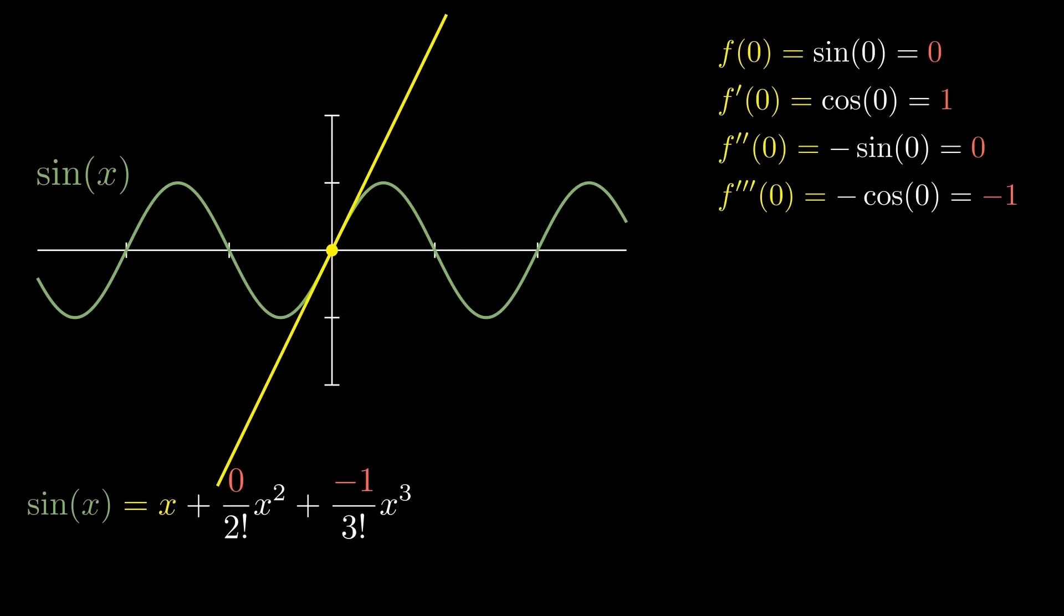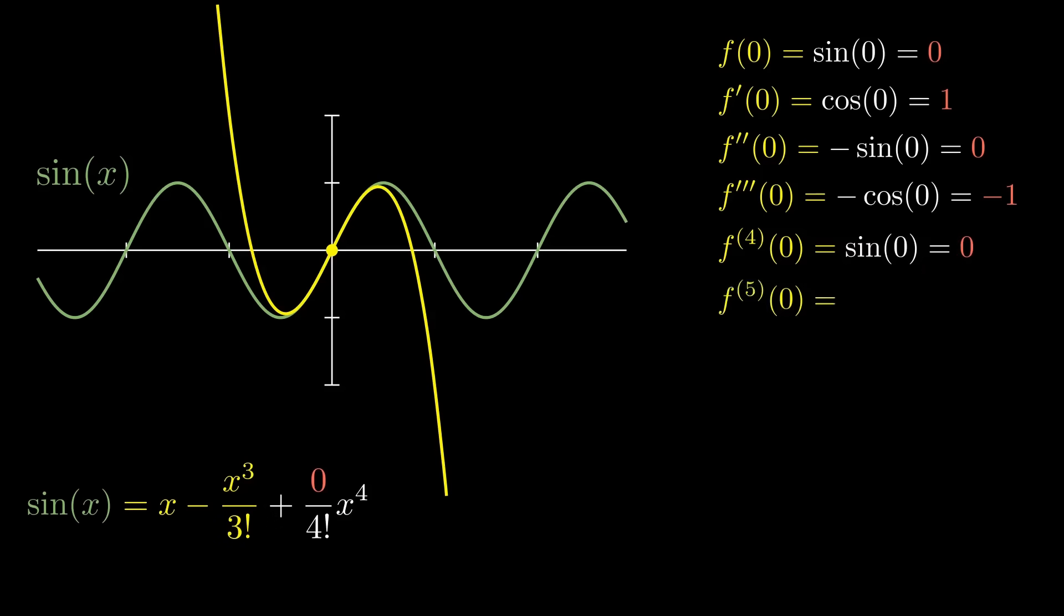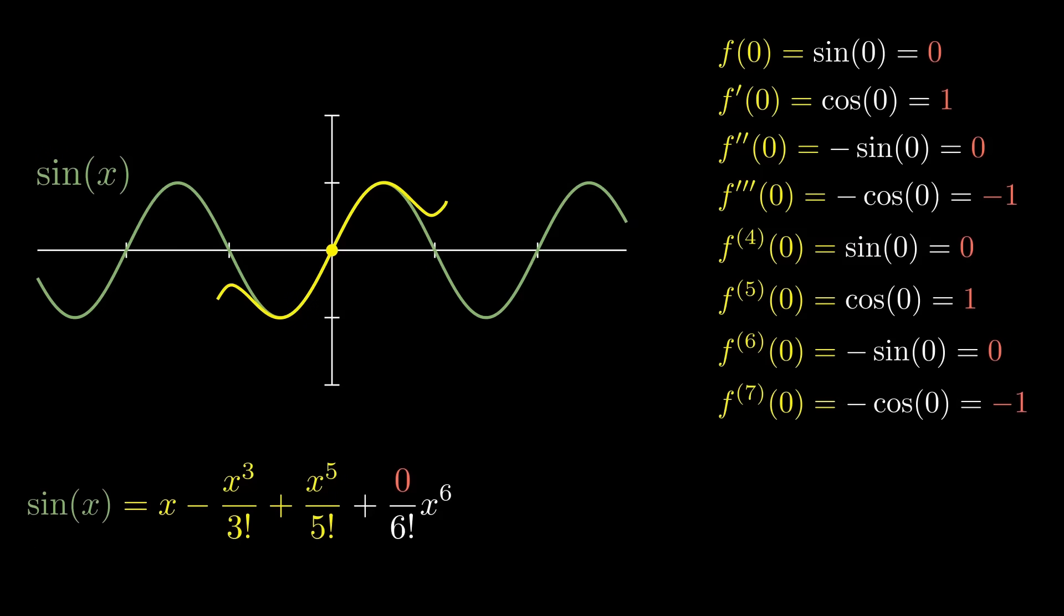And hopefully by the time you reach this particular derivative, you see that there's going to be a pattern with every other derivative that has sine is just going to cancel out because the sine of zero, no matter multiply with whatever, is just going to be zero. And you'll notice that the functions only leave the odd powered terms, which is kind of interesting because sine is an odd function. And of course, the approximation gets better and better as you go with more and more terms.